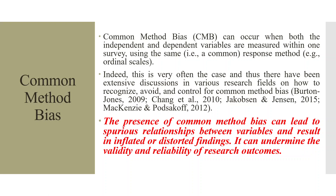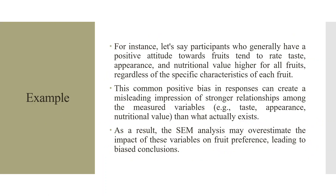Let's take one example of what common method bias is. Let's say participants who generally have a positive attitude towards fruit tend to rate taste, appearance, and nutritional value higher for all fruits regardless of the specific characteristics of each fruit. This common positive bias in responses can create a misleading impression of stronger relationships among the measured variables — taste, appearance, and nutritional value — indicating a very strong relationship among them than what actually exists. As a result, the analysis may overestimate the impact of these variables on fruit preference, leading to biased conclusions.